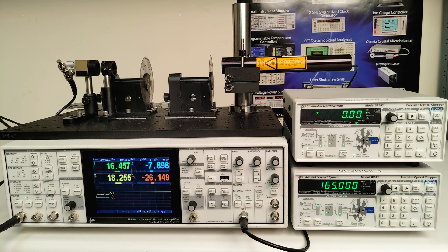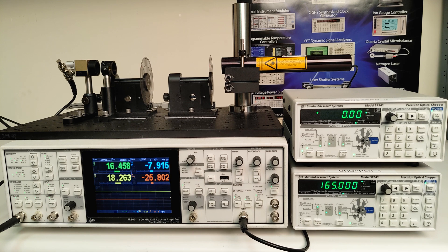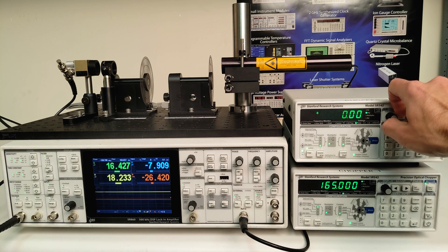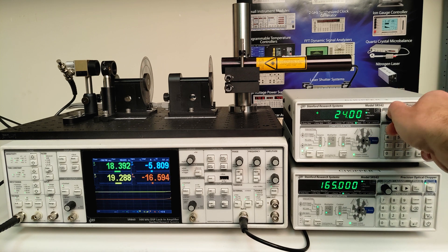We want to adjust chopper 2's phase until we recover the values of R and theta that we saw for the singly chopped beam. This will indicate that the two choppers are properly phase aligned. It's probably easiest to watch theta using it as a null indicator and bring it back to zero.